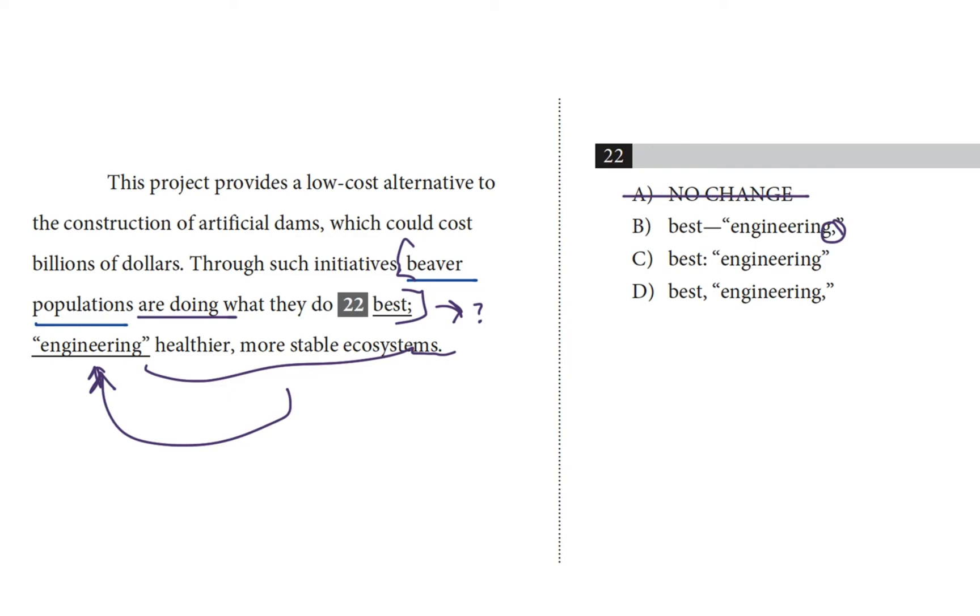And the same thing is happening in choice D, because it also has that comma after engineering. You're not supposed to separate a verb from its object with a comma. And that leaves C as our answer.